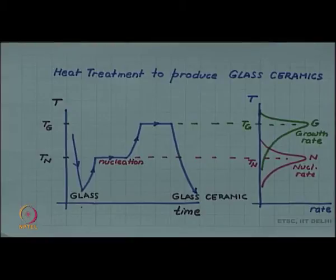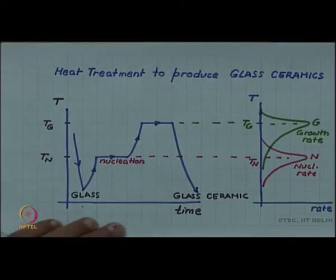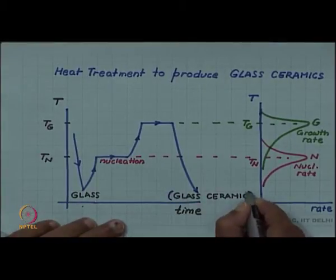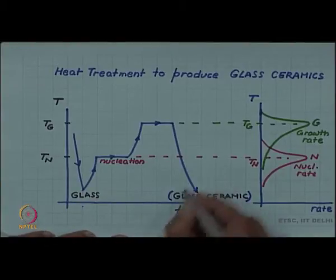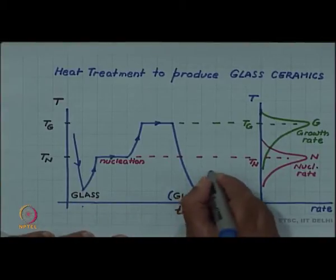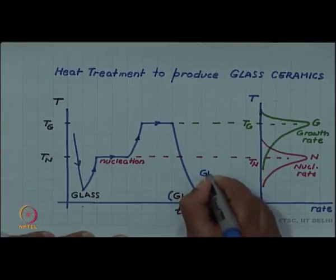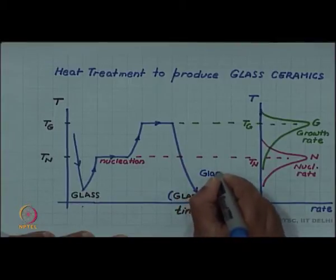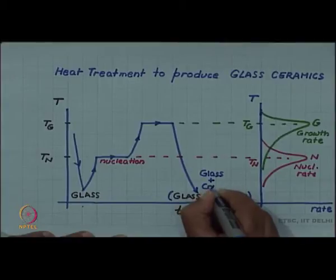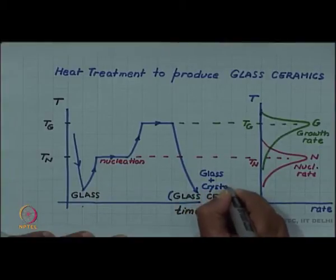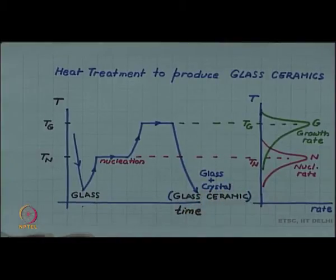Finally, the material is quenched to form the so-called glass ceramic. In this glass ceramic, it is not fully crystalline — it is actually glassy plus crystalline. Some glass matrix is also present along with the crystals.